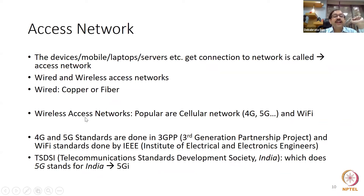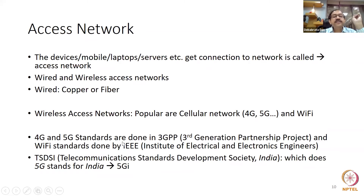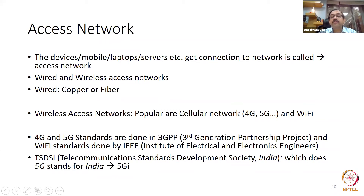Popular wireless access networks are cellular (4G, 5G) and Wi-Fi. Till today, Wi-Fi protocol has been sold the most in the world, next comes 4G and 5G. The 4G and 5G standards are done by 3GPP — Third Generation Partnership Project. This is extremely important to know if you're going for a job in top MNCs. 3GPP comes under the ITU. Wi-Fi standards are done by IEEE — Institute of Electrical and Electronics Engineers.